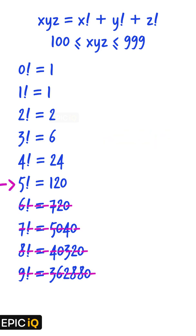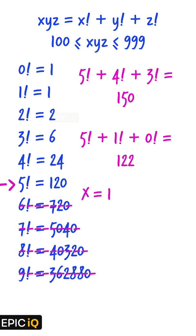Now, the largest possible value of the number xyz is the sum of the factorials of 5, 4, and 3, which is 150. So, xyz can have a value between 122 and 150. This means that the value of x will be 1.